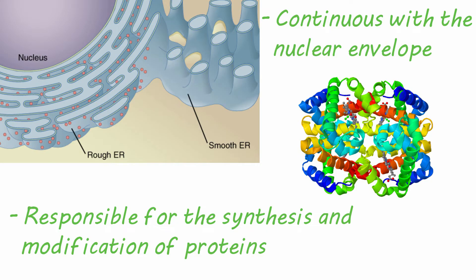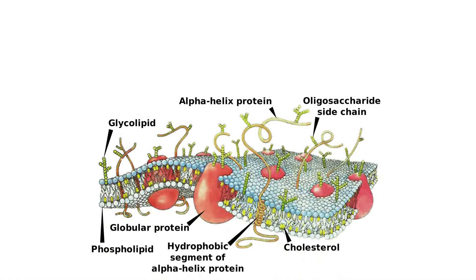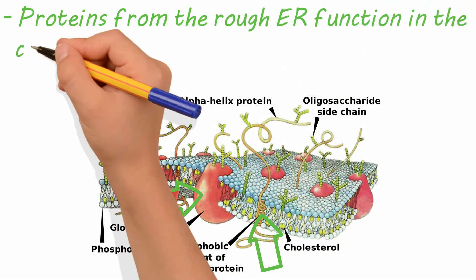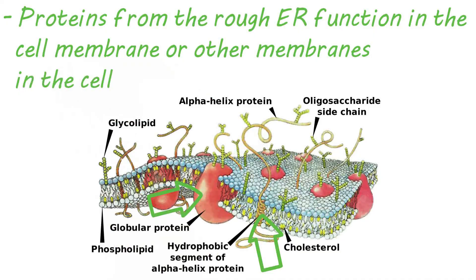The proteins that are modified in and passed through the rough ER are primarily membrane bound proteins that will function in either the cell membrane itself or the membranes of the other organelles within the cell.